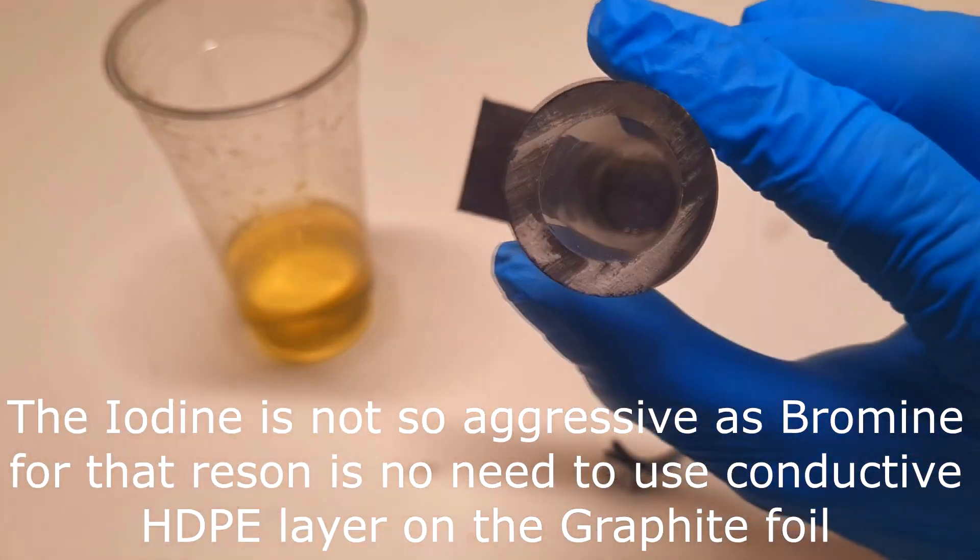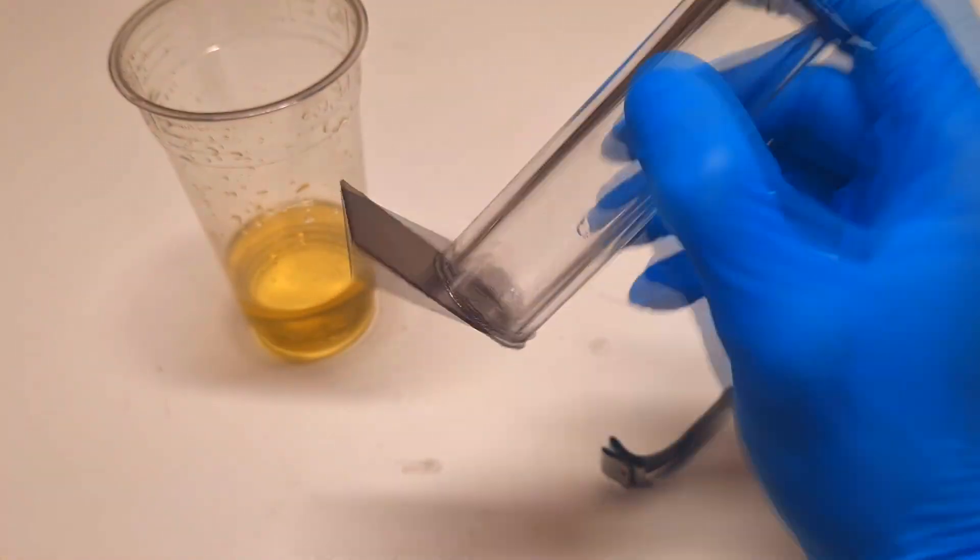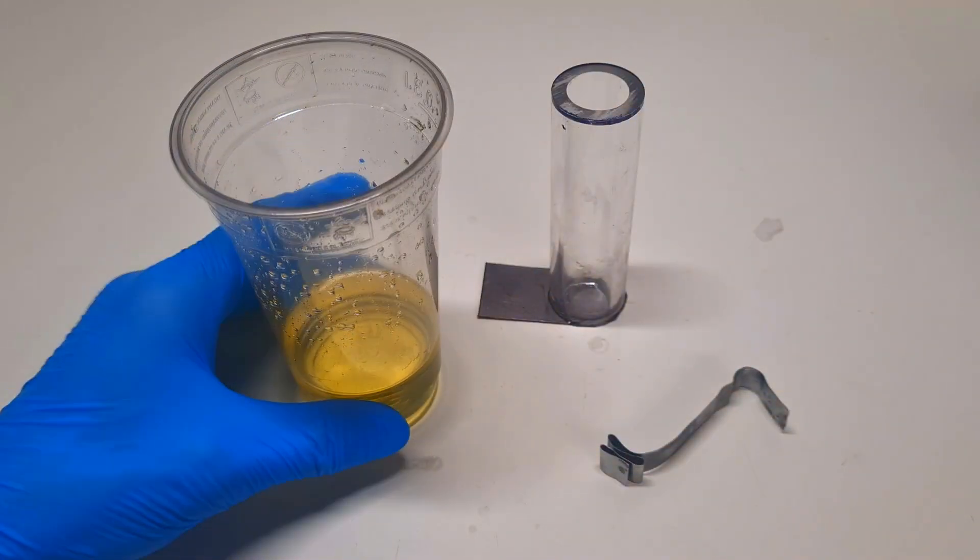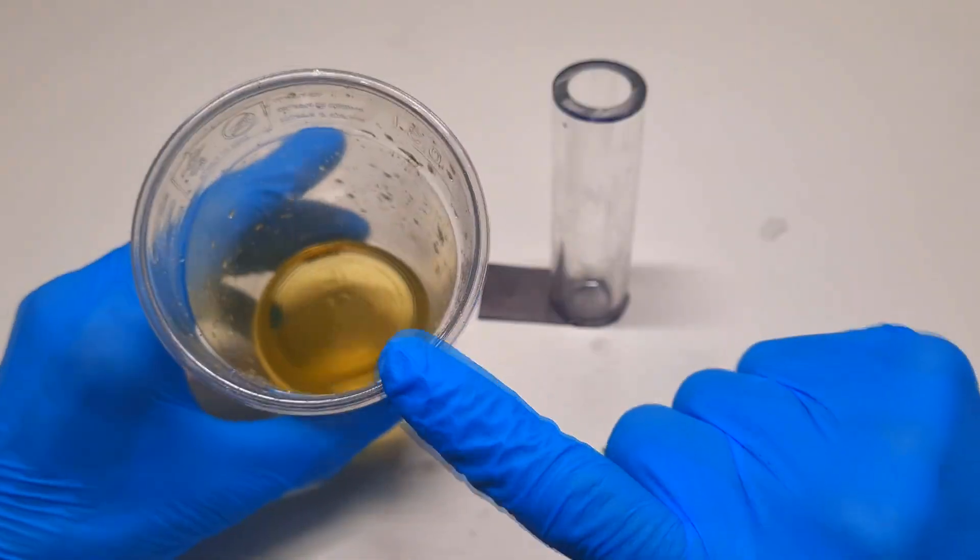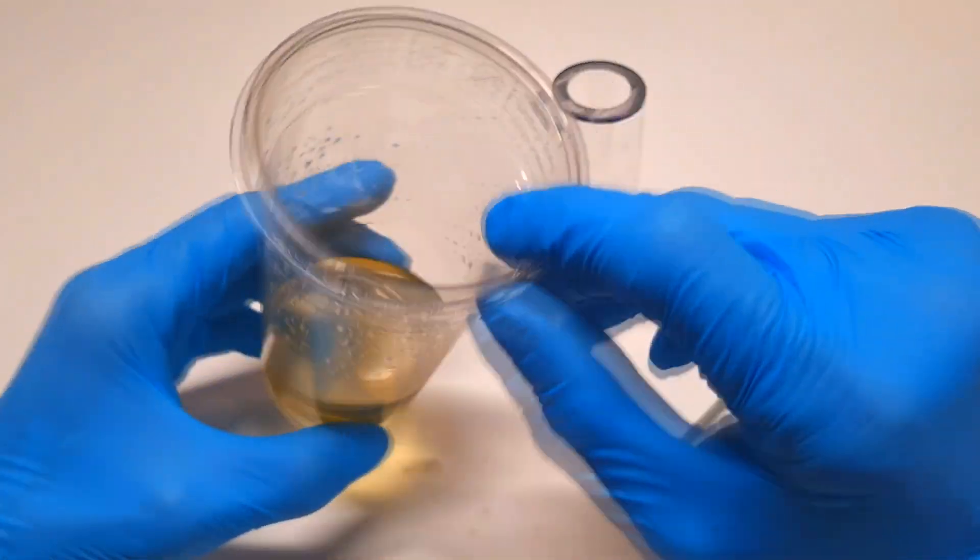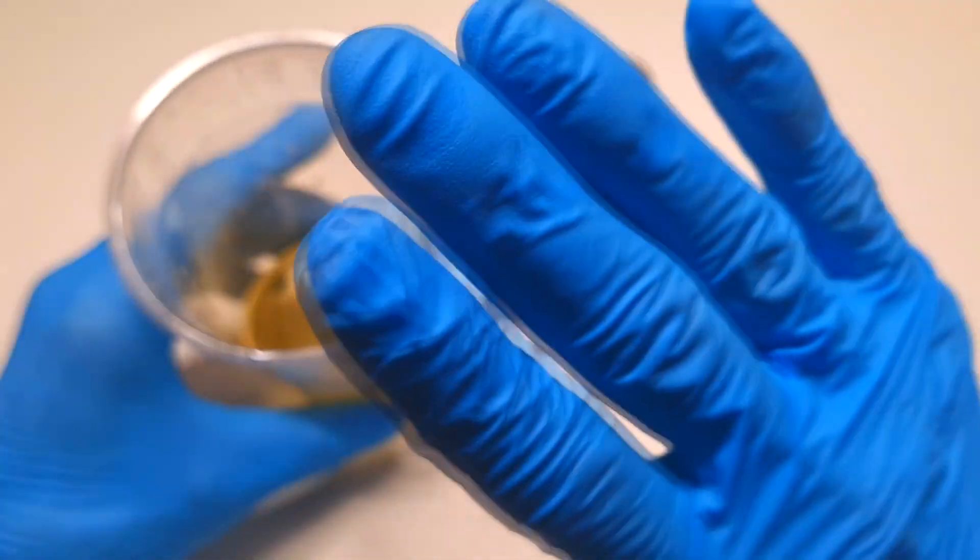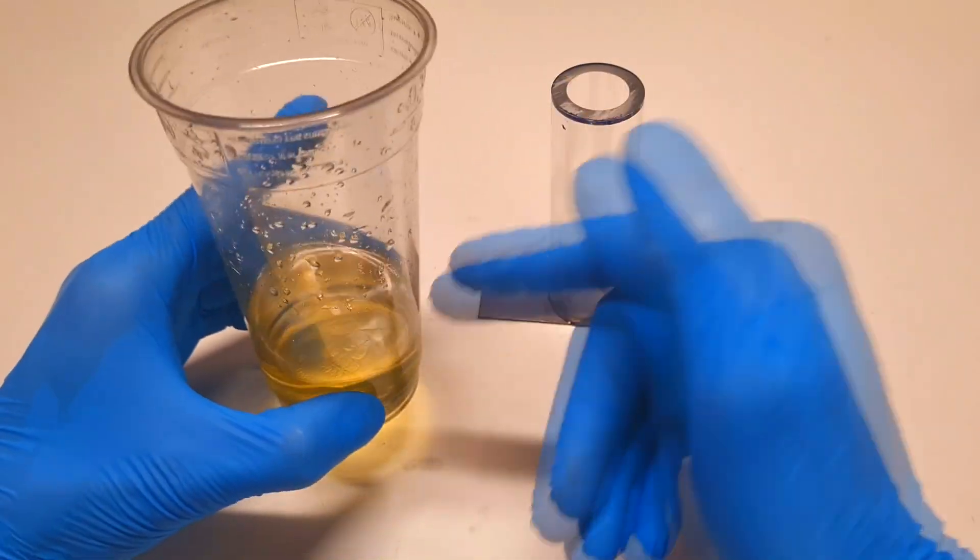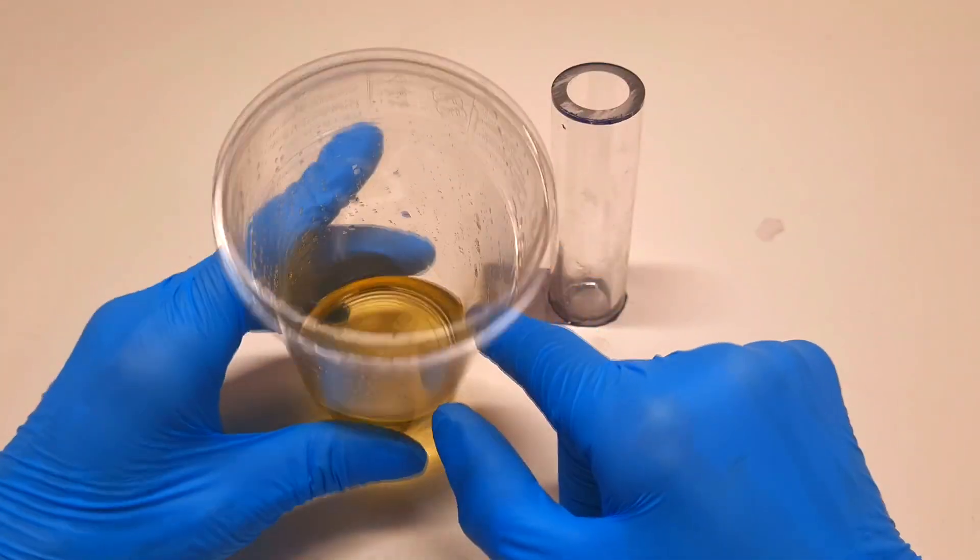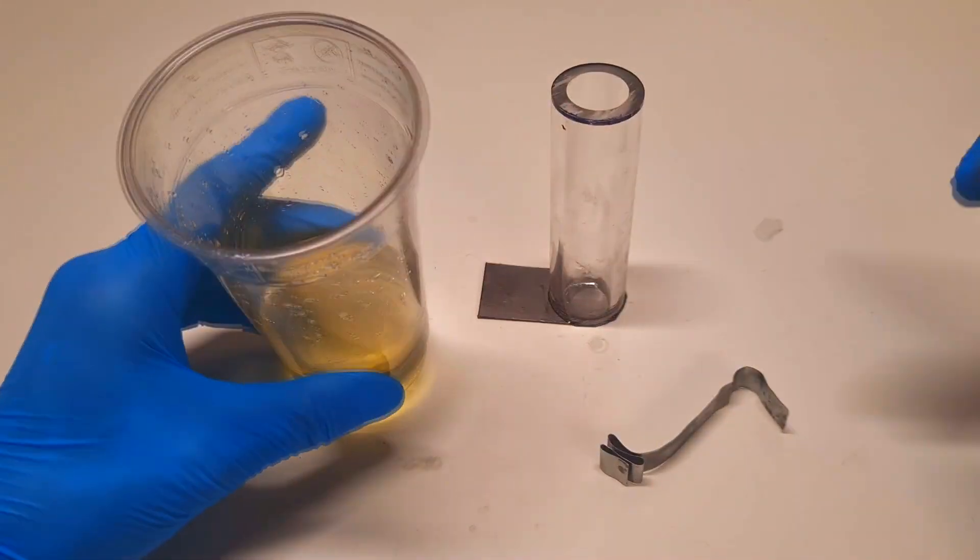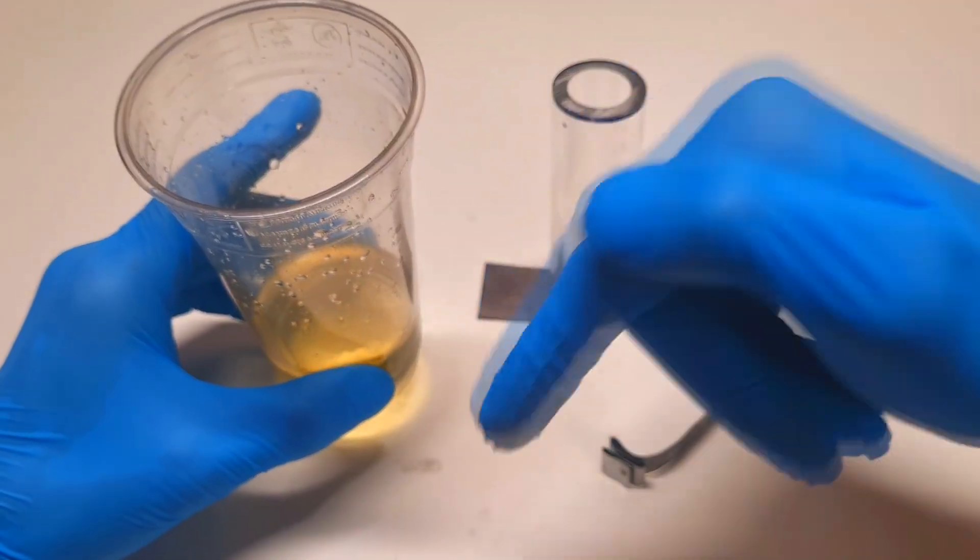So here I only use graphite foil. Then over here I have the electrolyte, which is this one molar zinc iodide electrolyte. How to prepare this kind of electrolyte is in my last video, so the link to this video will be in the video description.